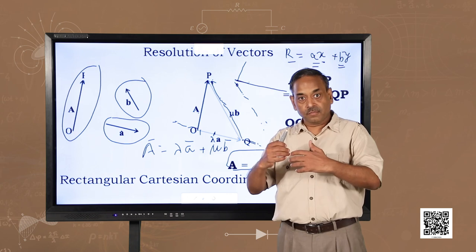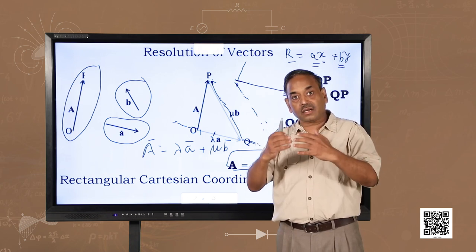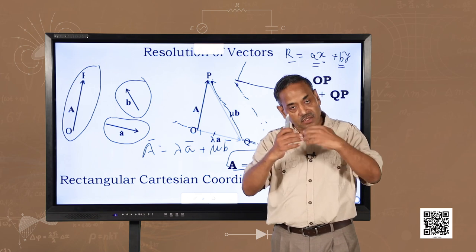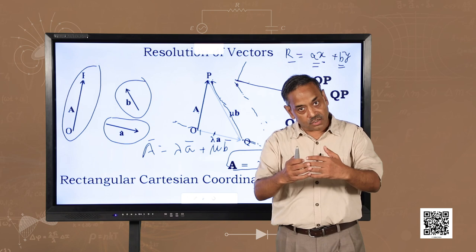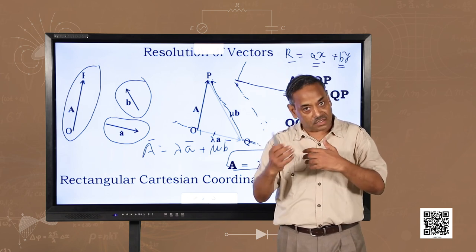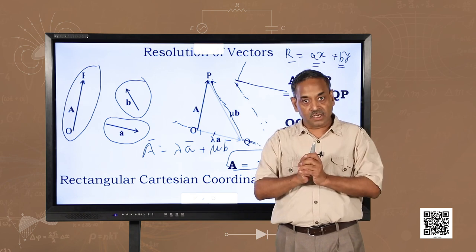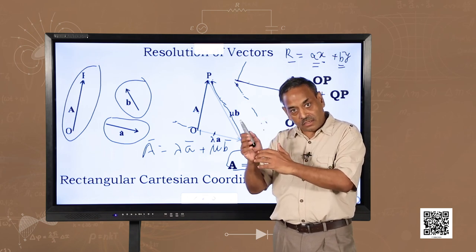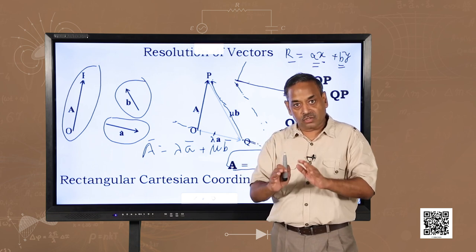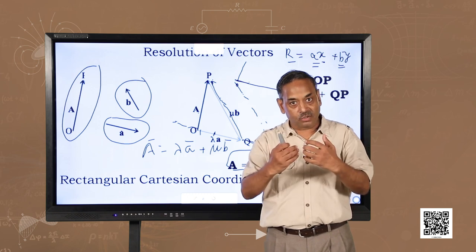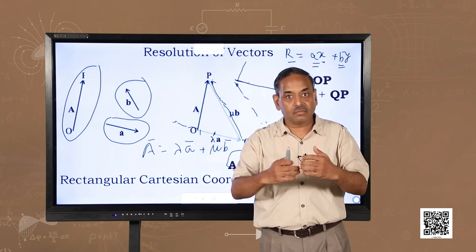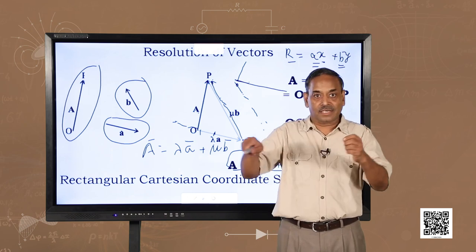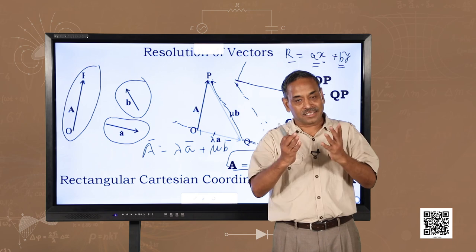In the next episode I will discuss the resolution of vectors in the rectangular Cartesian coordinate system — x, y, and z axes. During this course for class 11th and 12th, we will mostly use the rectangular Cartesian coordinate system, though other systems like polar, cylindrical, and spherical coordinates also exist. Friends, till then stay safe, bye.